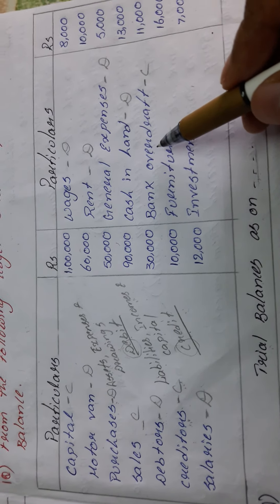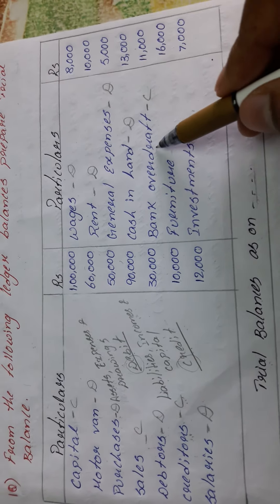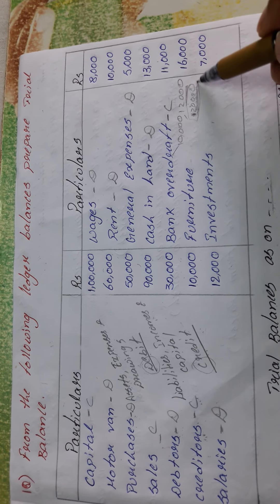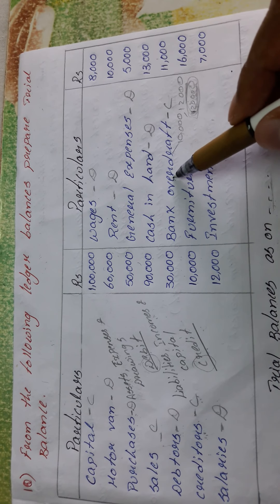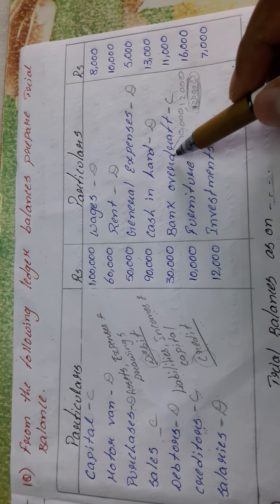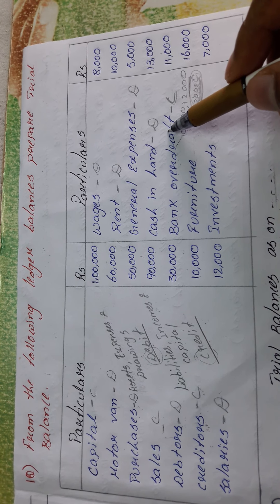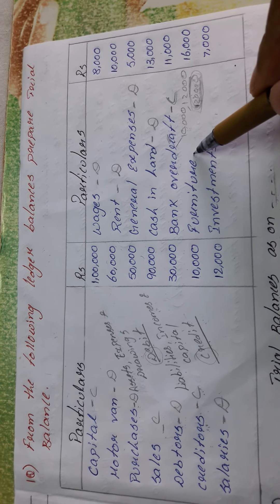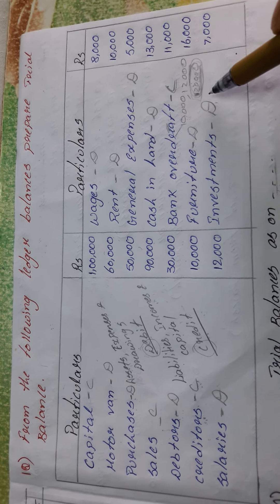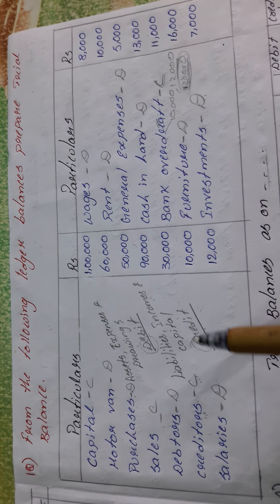Cash in hand is an asset, so it is debited. Bank overdraft is a liability and is credited. Bank overdraft means I had 10,000 rupees in my account but spent 12,000 — the additional 2,000 was paid by the bank, so I owe it back. That amount drawn beyond the balance is called bank overdraft, which is a liability. Furniture is an asset, so debited. Investment is also an asset, so debited.